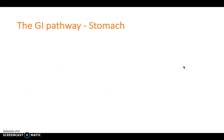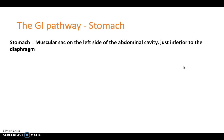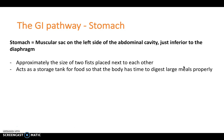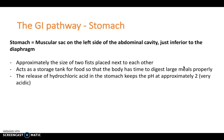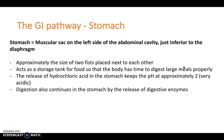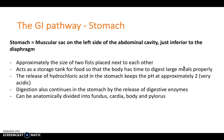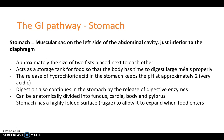After the esophagus we move into the stomach, a muscular sac on the left side of the abdominal cavity just inferior to the diaphragm. Approximately the size of two fists placed together, it acts as a storage tank, giving the body time to digest large meals before releasing chyme into the duodenum. It can be anatomically divided into the fundus, cardia, body and pylorus, and has rugae on its surface to allow expansion when food enters.